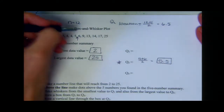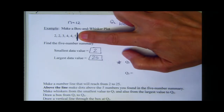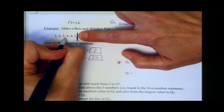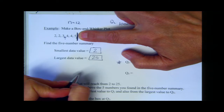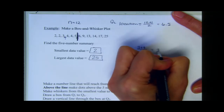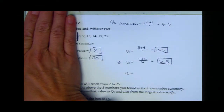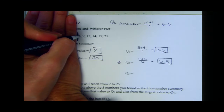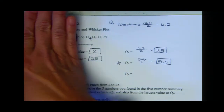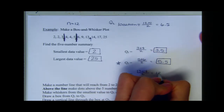Now we have quartile two at 5.5. To find quartile one, use the lower six numbers. The median of the lower half is between the third and fourth values: three plus four divided by two is 3.5. So quartile one is 3.5. To find quartile three, use the upper six numbers. Quartile three falls between 13 and 14: thirteen plus fourteen divided by two is 13.5.